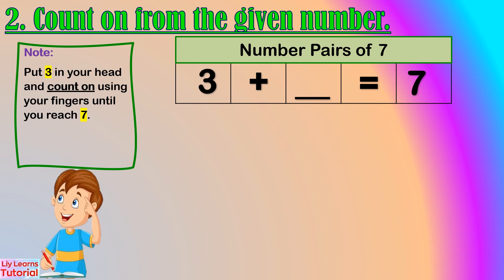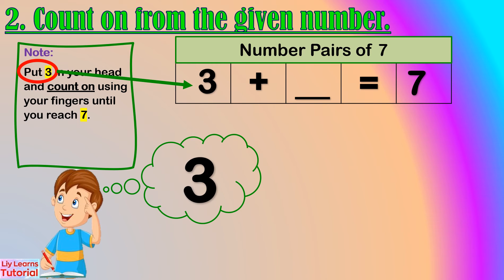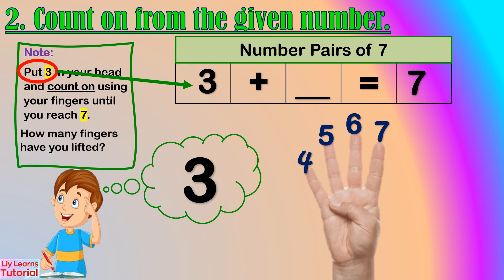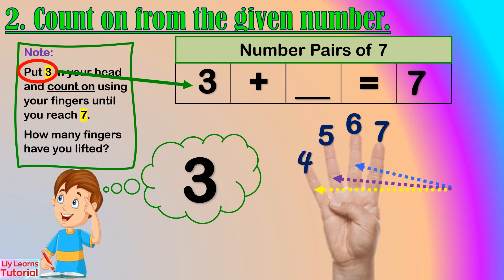Let's start from 3. Hold 3 in your head, then count up: 4, 5, 6, 7. How many fingers have you lifted? 1, 2, 3, 4 — 4 fingers. So, the number pair of 3 is 4.